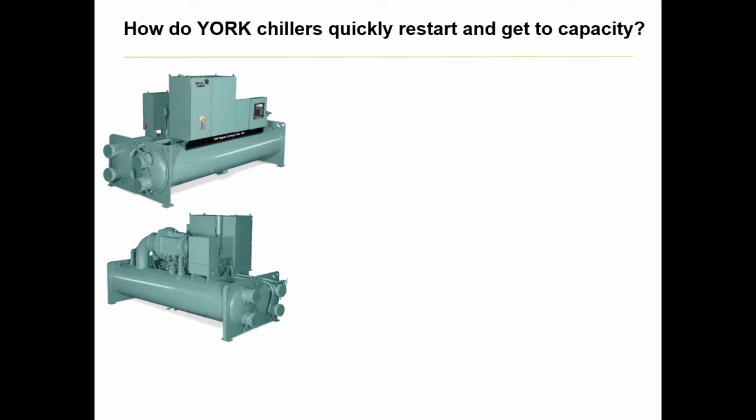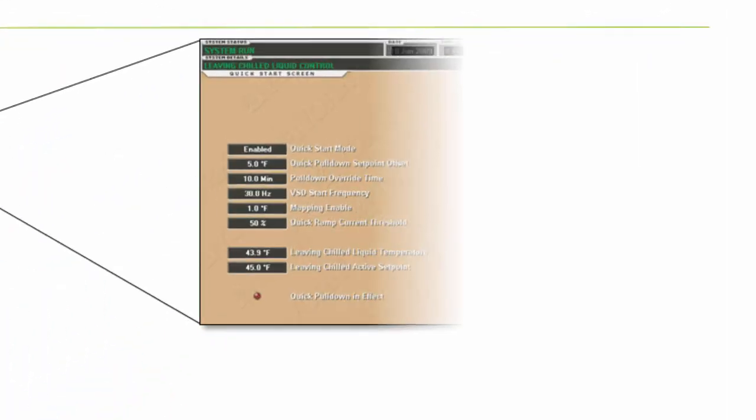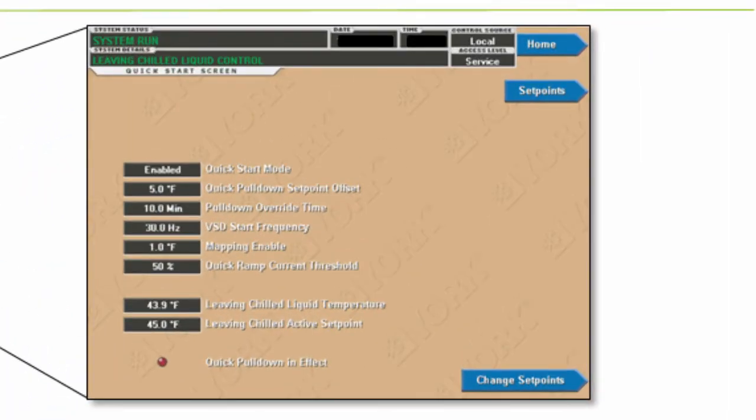Well, specifically for a chiller like the YMC-squared that was tested, it can get started and back to capacity so fast due to three primary drivers. First, by implementing the proprietary Quick Start software, which optimizes chiller startup and ramp-up processes.